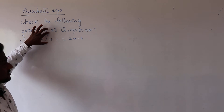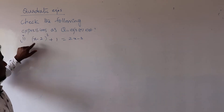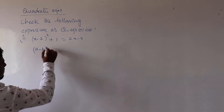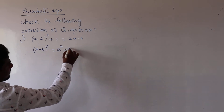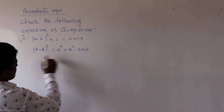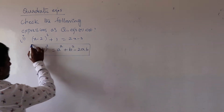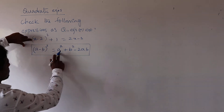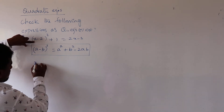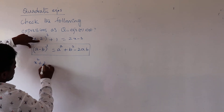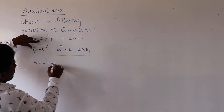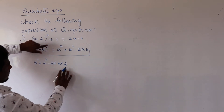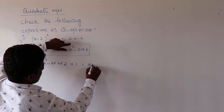Here, x minus 2 whole square is in the form of the identity (a minus b) whole square, which equals a square plus b square minus 2ab. In place of a we have x, and b is 2. So expanding: x square plus 2 square minus 2 into x into 2, plus 1, equal to 2x minus 3.